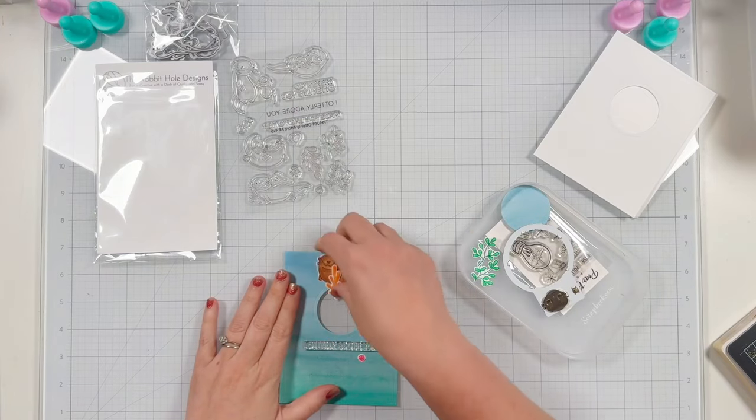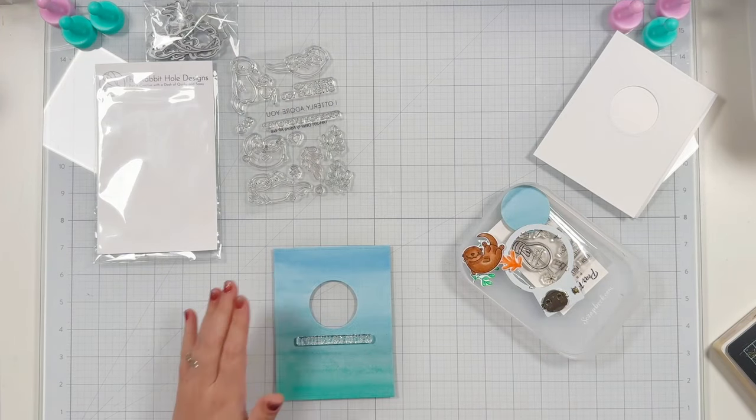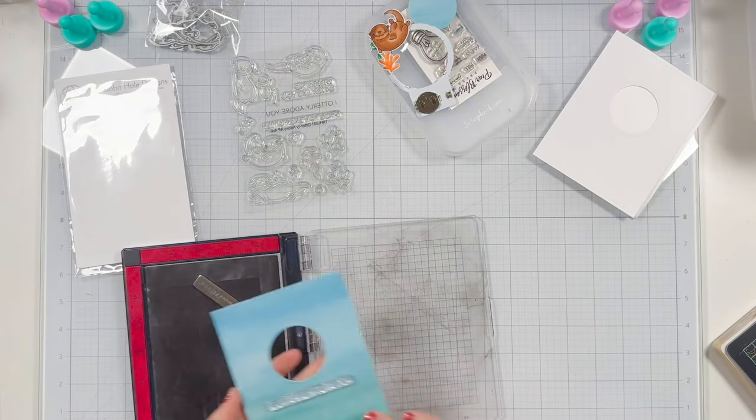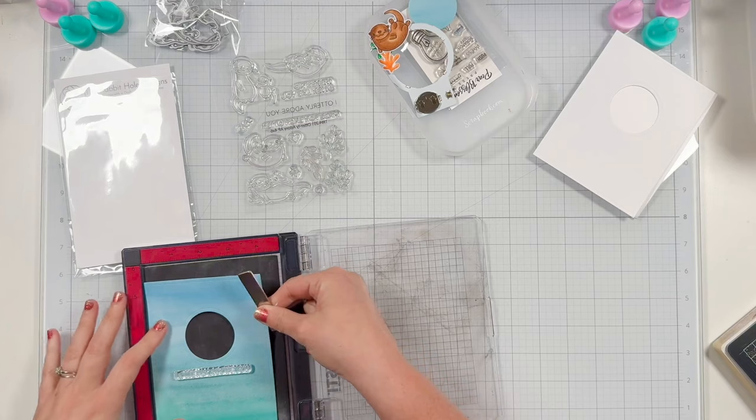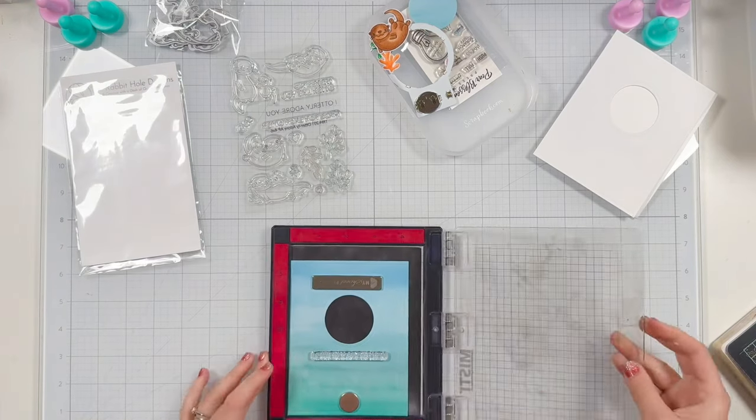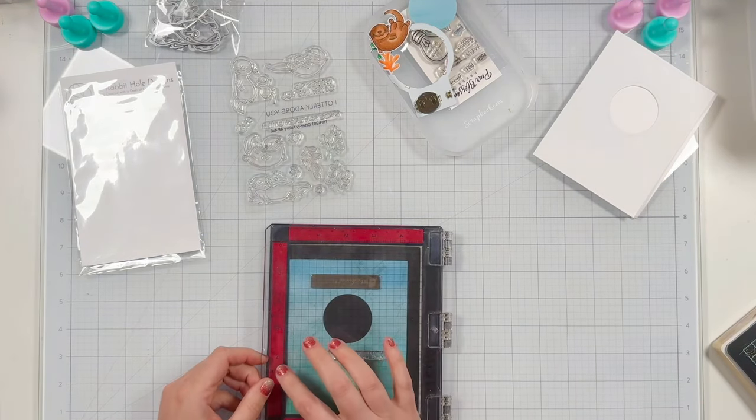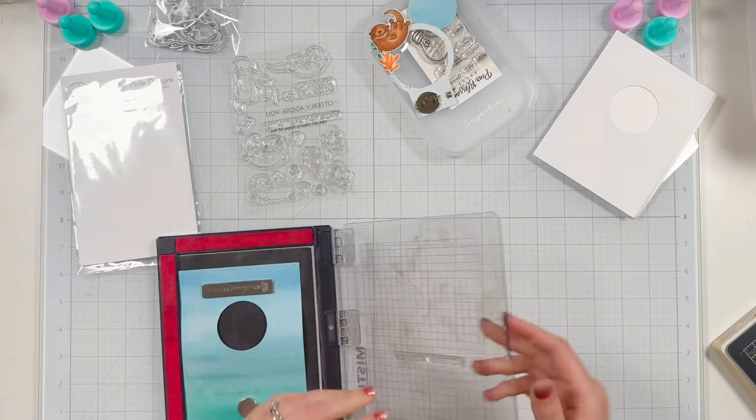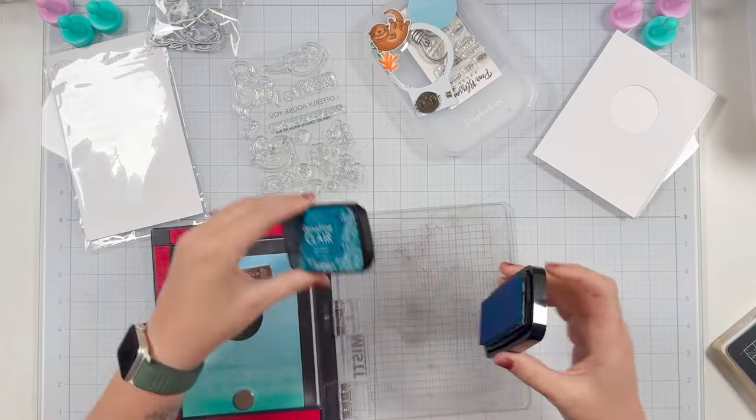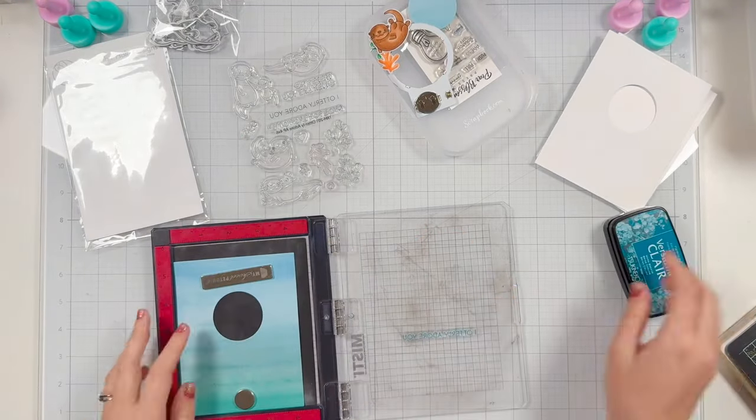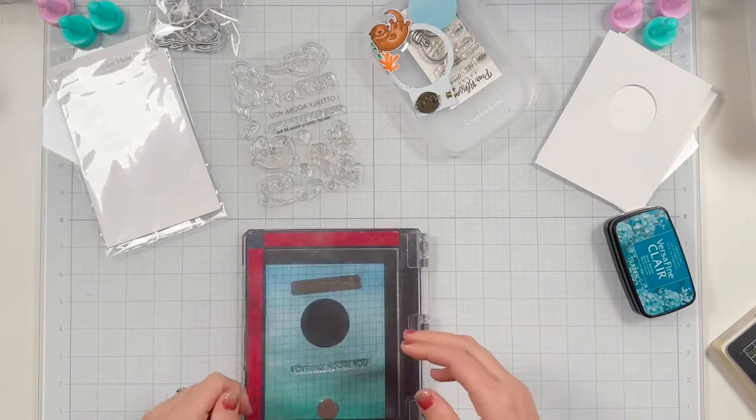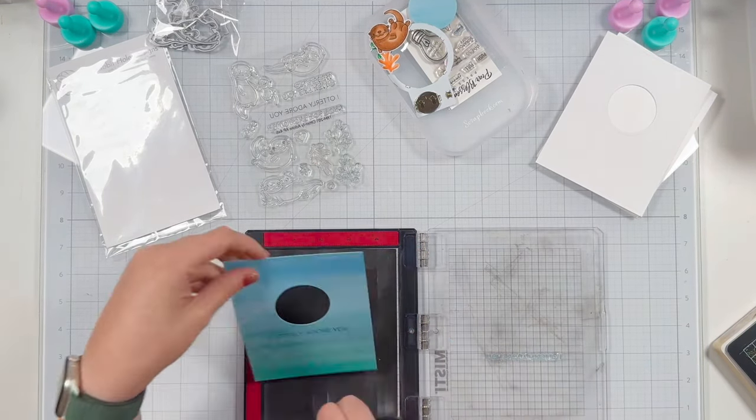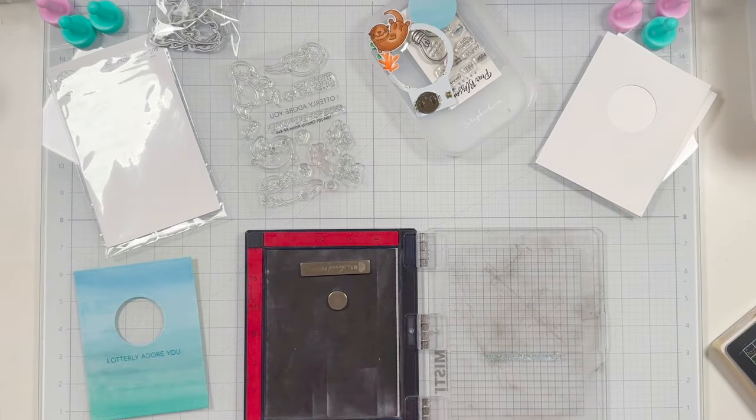So I just put my stamp approximately where I want it to go on my paper and I'll get out my Misti again so I can use the grids on the cover plate of the Misti to get my sentiment straight and centered. Once I'm happy with the placement I'm going to grab another color VersaFine Clair. This time I'm going to grab Warm Breeze. It's more of like a teal color and I just thought that would look really pretty on the watercolor pattern paper that I have for my card. So I went ahead and stamped it. I only needed to stamp it once. The VersaFine Clair stamps really nicely and I'll go ahead and clean off my stamp and put that away.